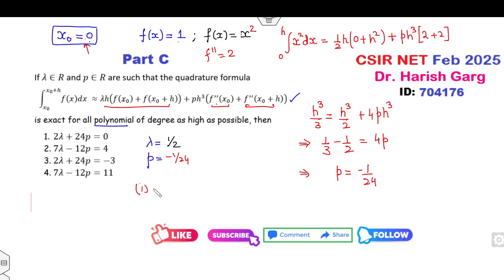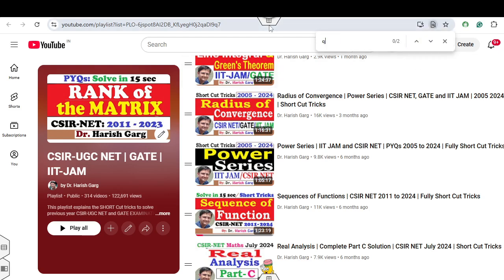Now look at the first option: 2λ + 24p which is 0, satisfied. Third option cancels. 7λ plus 7/2 minus minus plus 1/2, 8/2 is 4, satisfied, and the fourth option is cancelled out. So the right answer is a and b are the correct answer. So it's a very simple approach if you have read this lecture before this lecture.